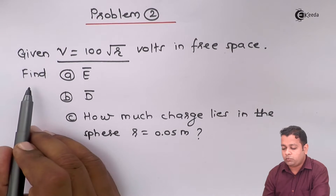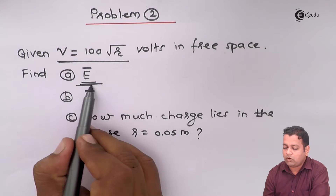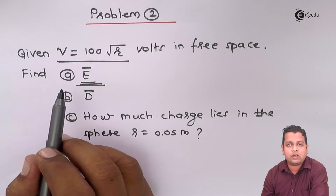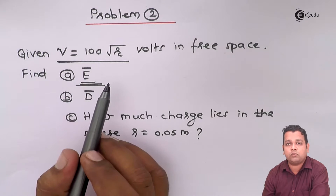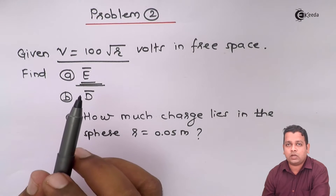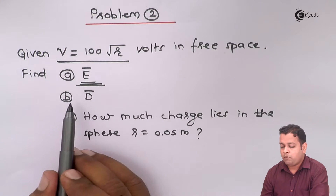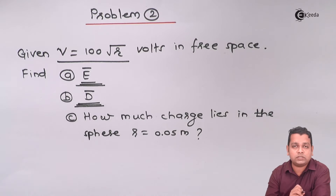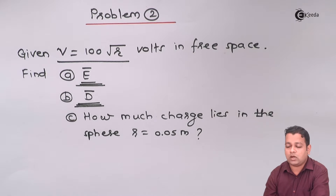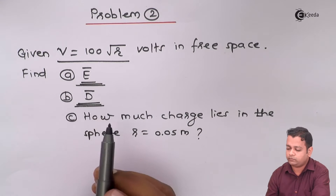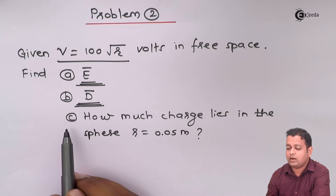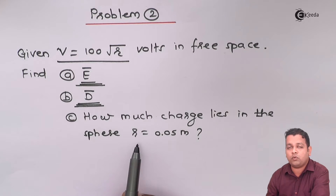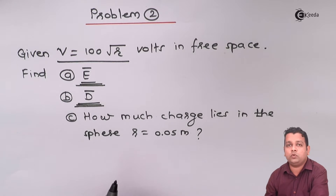We are asked to find E bar — the electric field intensity vector — in part A. In part B, we are asked to find D bar, the electric flux density, which we covered in the last chapter on Gauss's law and divergence. And in part C, we are asked to find how much charge lies within the sphere of radius R equal to 0.05 meters.